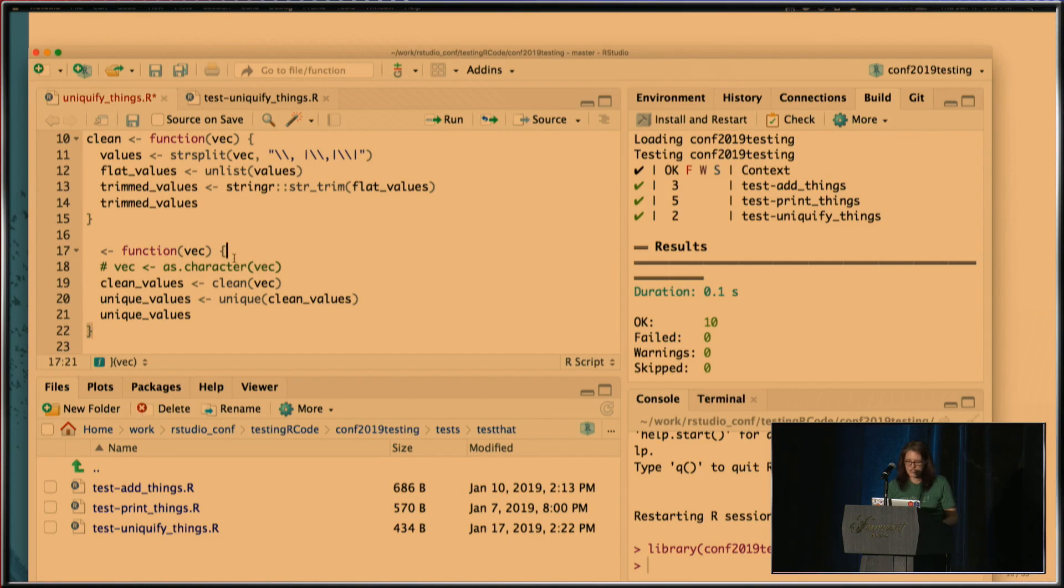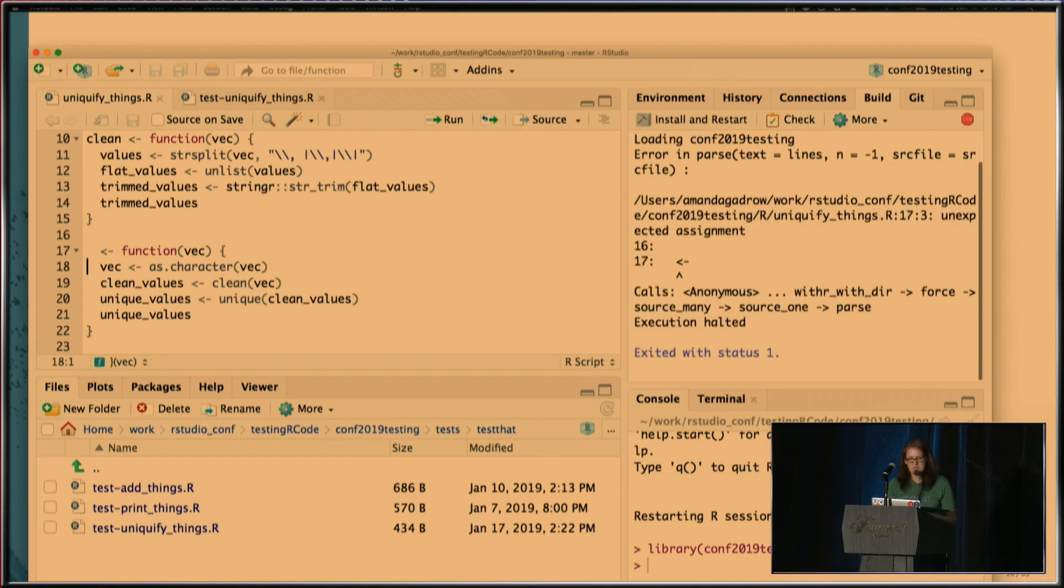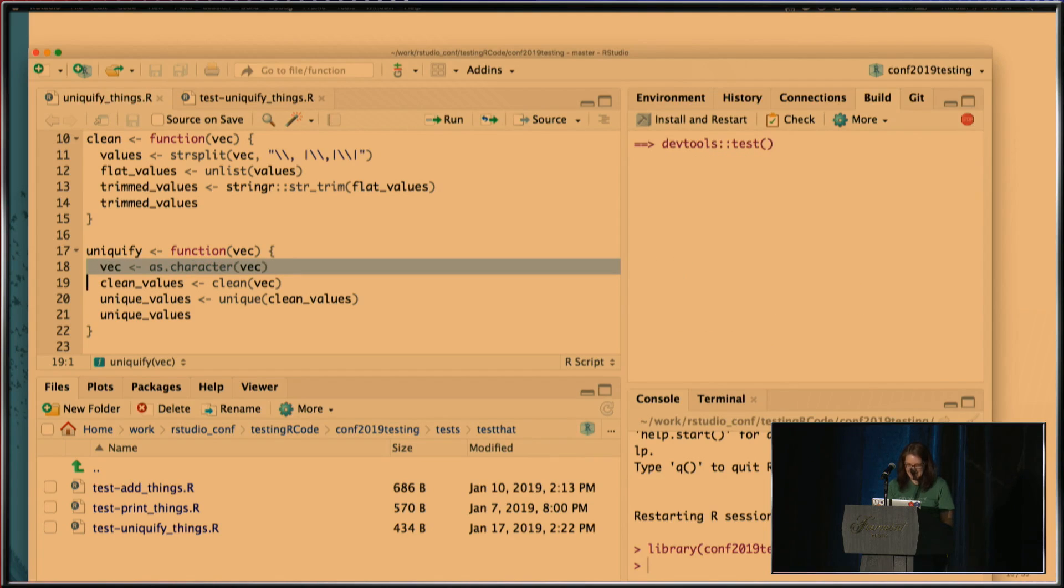So at this point, I'm going to make a change to my code. Right now, I'm only expecting a character vector. But I want to be able to handle factors as well. So I'm going to add some very simple code to be able to handle factors. This is great. I'm going to save it. I'm going to run the test because I just do this as a habit, just to make sure everything's still working. And it did not like that. What did I do? Oh, that was really smart of me, wasn't it? All right. Thank you. Let's try that again.